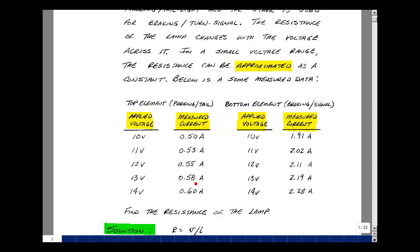This doesn't fall on a straight line through the origin. In ECE 302 we'll talk about AC resistance and DC resistance. For now, I'm just going to take this data and do an approximation. Now for the bottom element (braking and turn signal), applying the same voltages drew 1.91 amps, 2.02, 2.11, 2.19, and 2.28 amps.